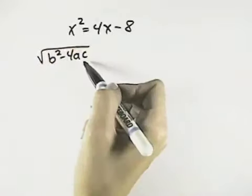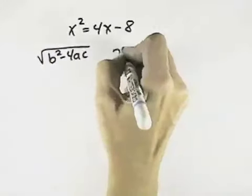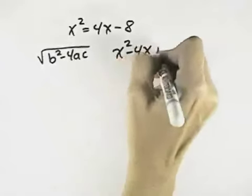To find out what b, a, and c are, we need to get everything on one side. So I'm going to subtract the 4x and add the 8 to get everything on the left.